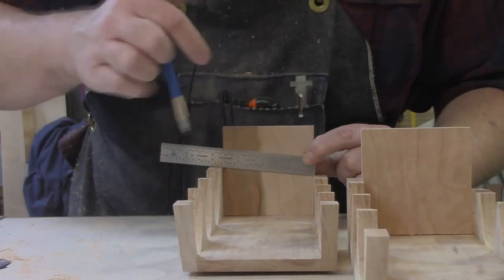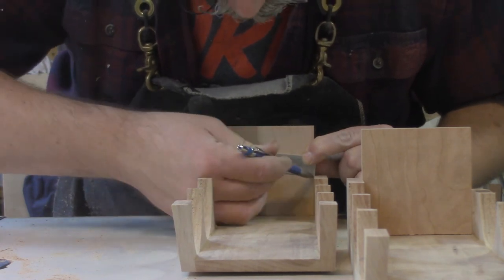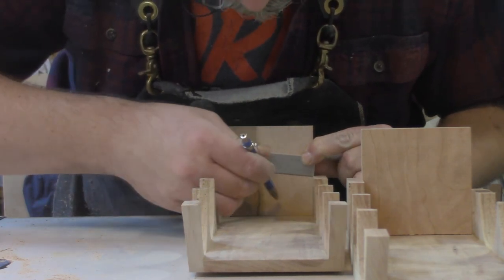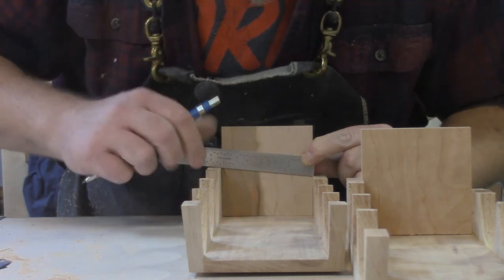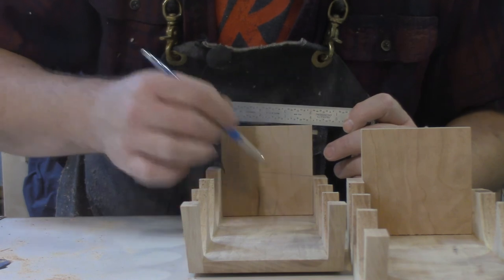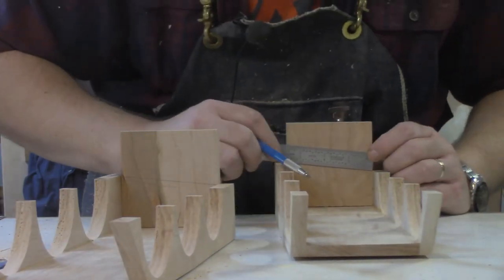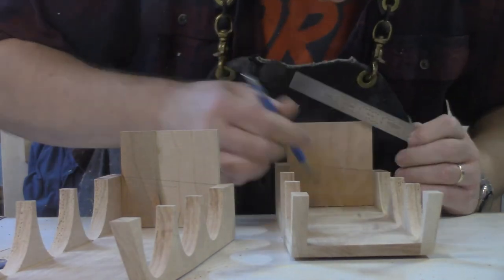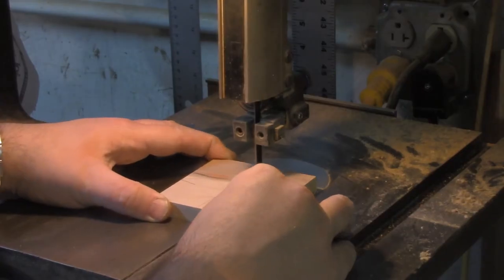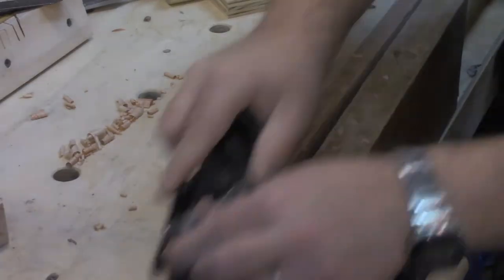So I'm going to put a ruler across here, just draw a line. That one goes back there. I'm going to mark a little V in here as well and do the same on this side. Now I can just cut almost to that line and then I can sneak up on the cut so everything closes up nicely.